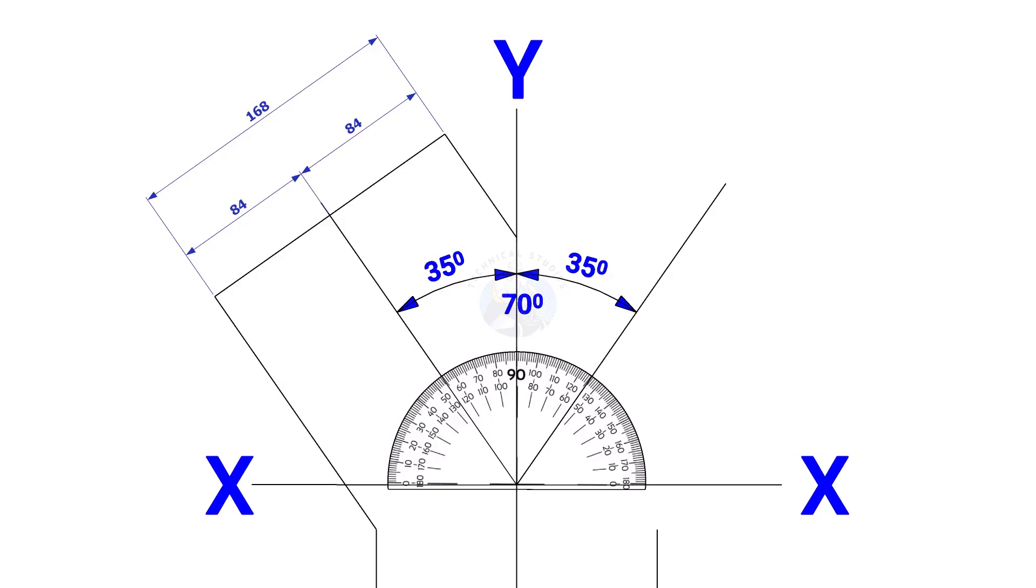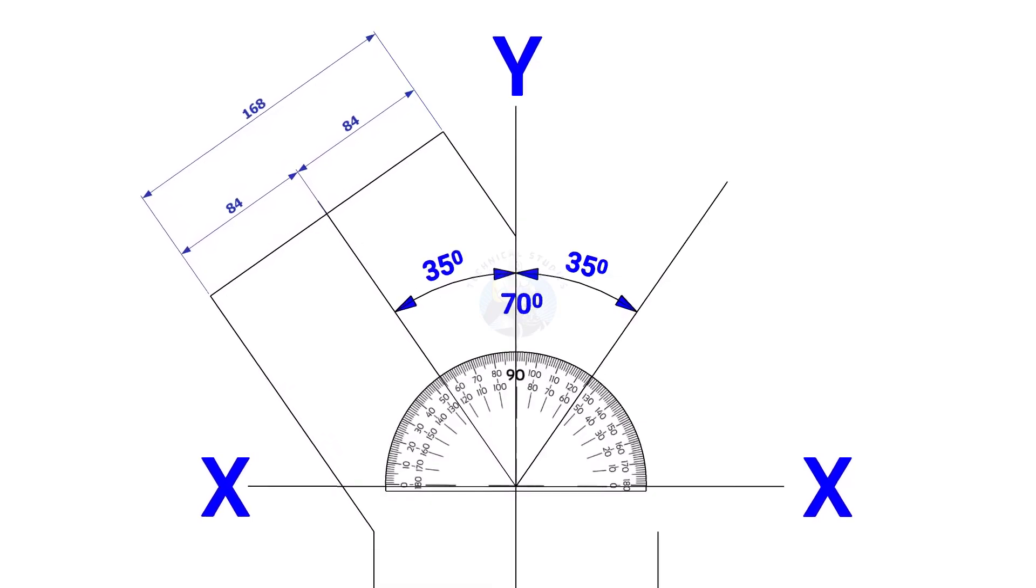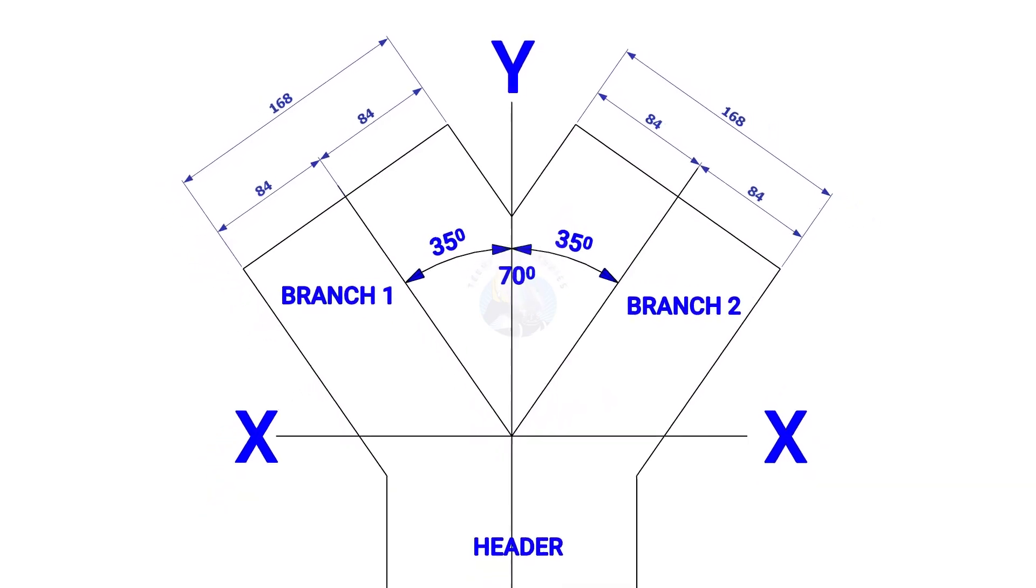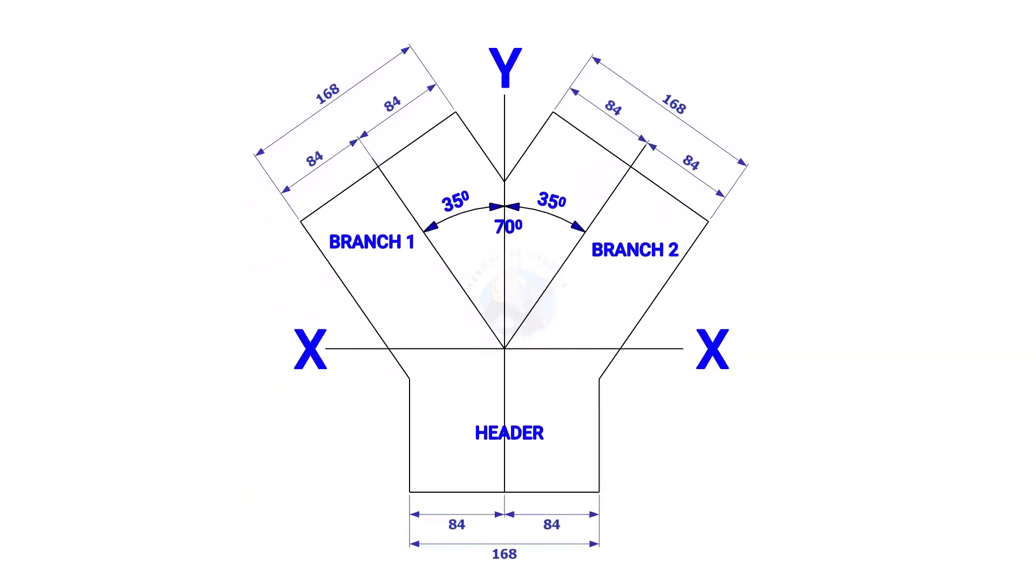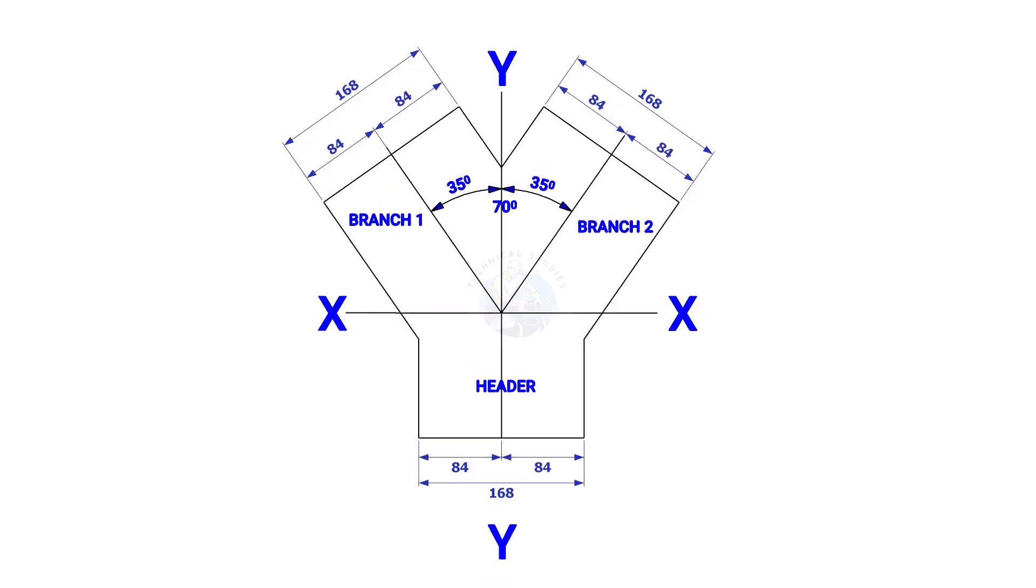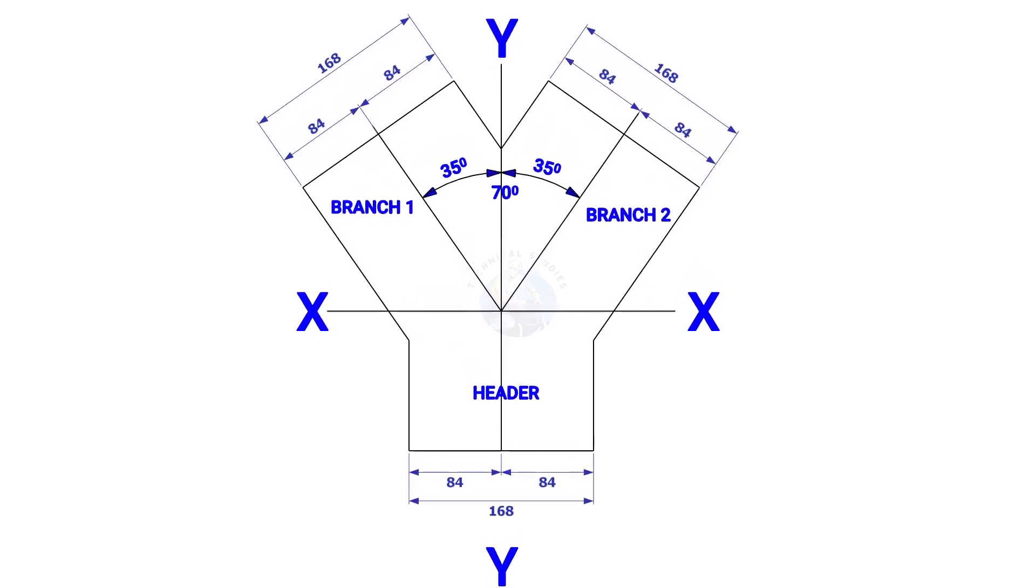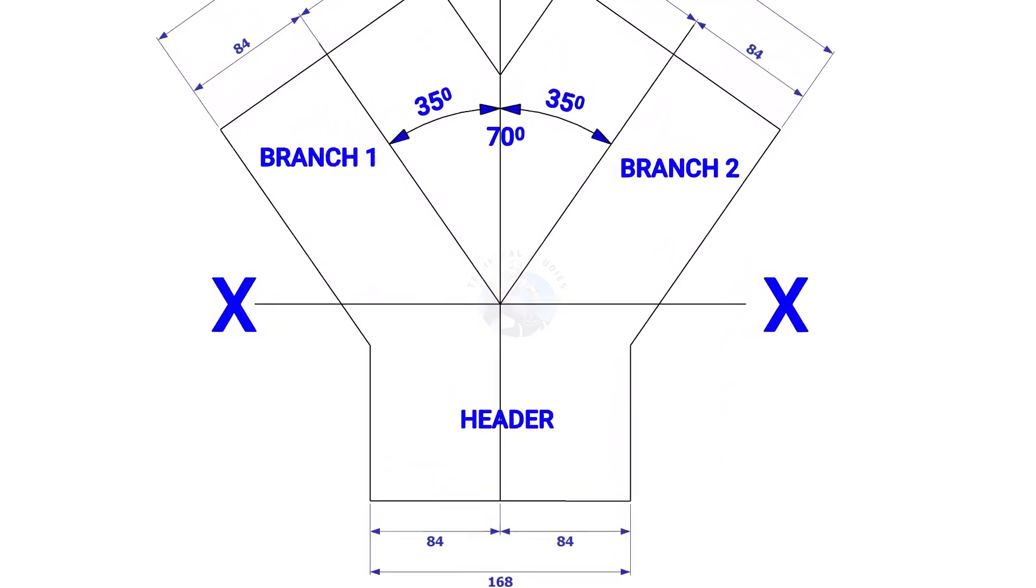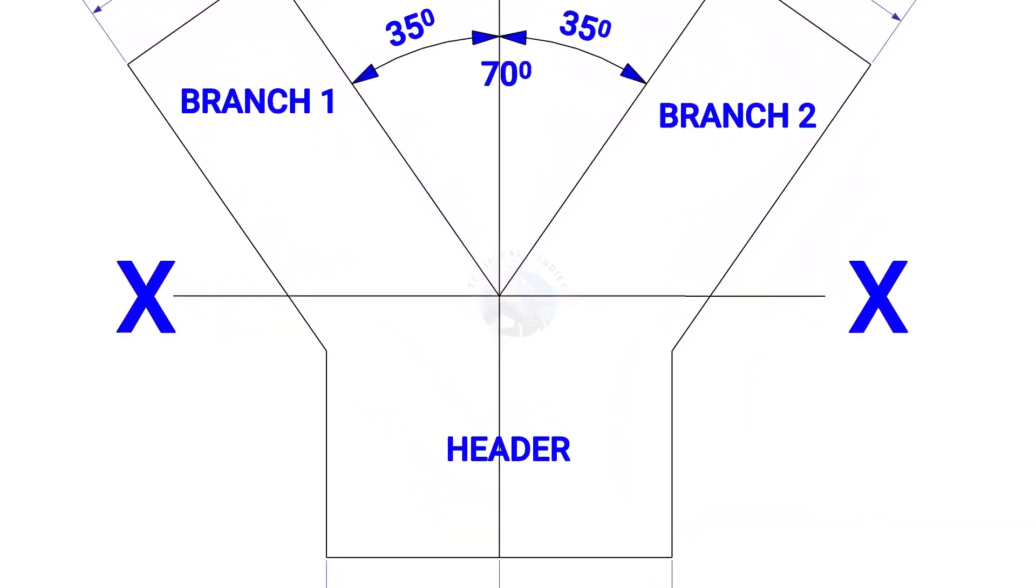Draw the branches also, as shown. Draw a half circle below the header. Draw lines connecting the branch and header meeting point to the center, as shown.